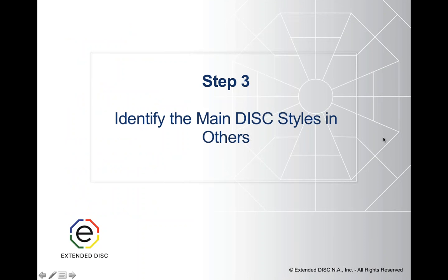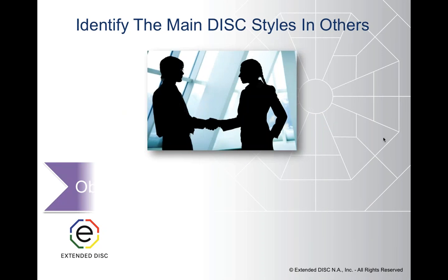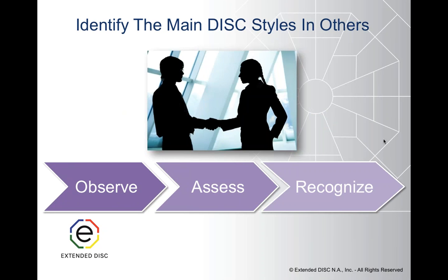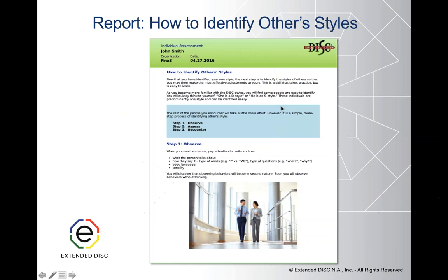So moving on to step three — how do we identify the main DISC styles of others? One of the strengths of the DISC model is that you can learn to identify what is the primary DISC style in others — it just takes practice. We use the OAR acronym: observe, assess, and recognize. Those are the steps we take to help us identify.